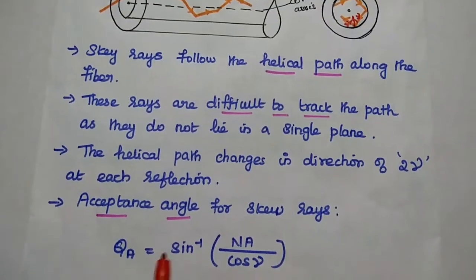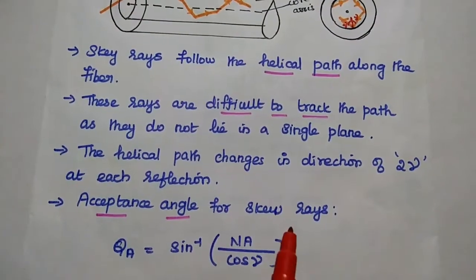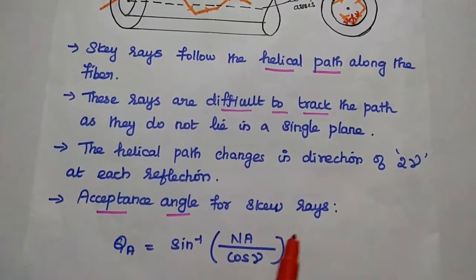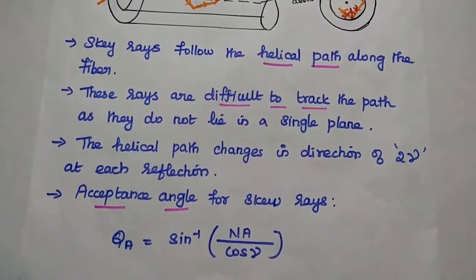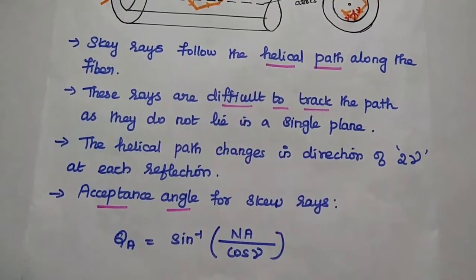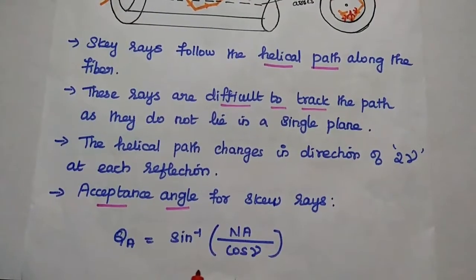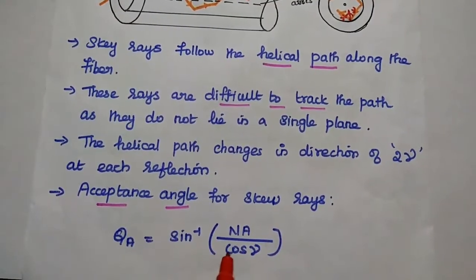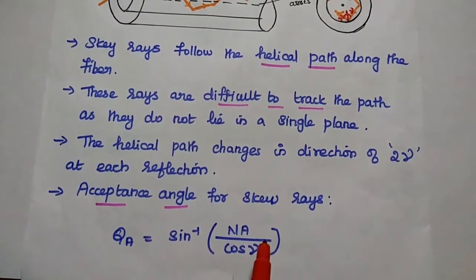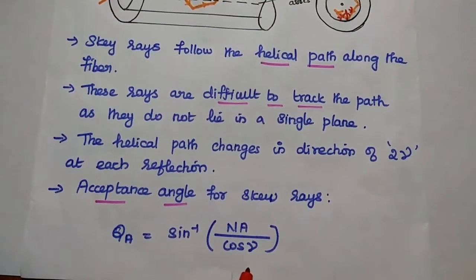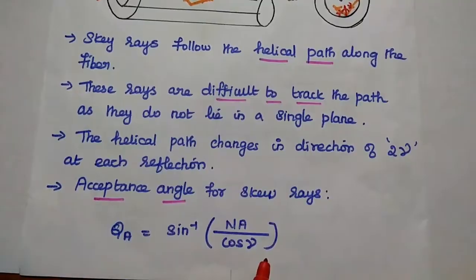The acceptance angle for skew rays is given as theta_A equals sine inverse of numerical aperture divided by cos gamma.